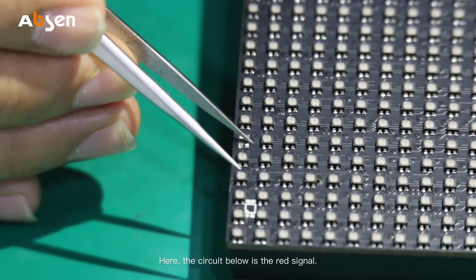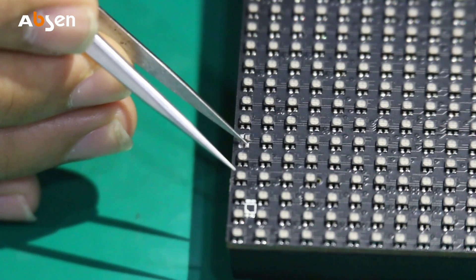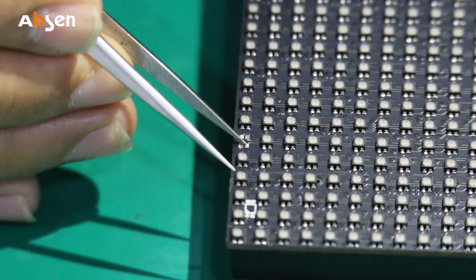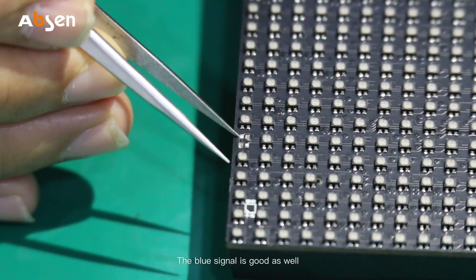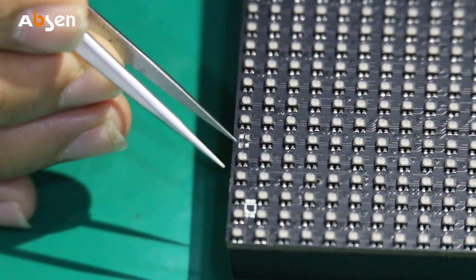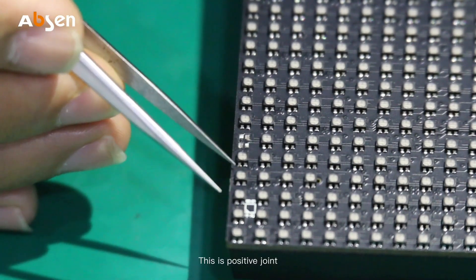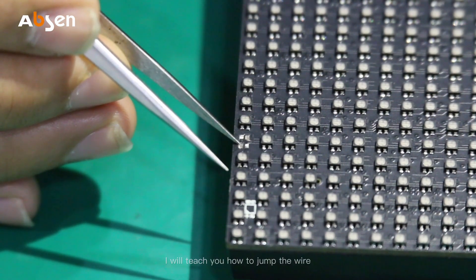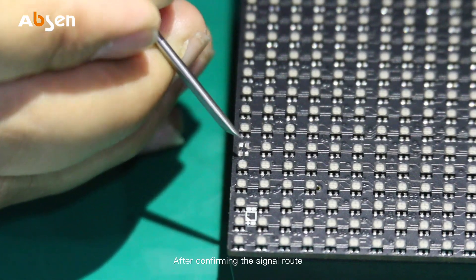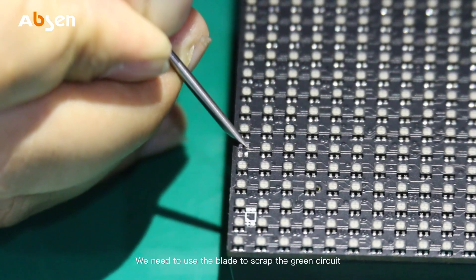Here the circuit below is the red signal. The red signal is good. The circuit is a blue signal. The blue signal is good as well. This is positive pole. We can connect the positive signal from the pixel next to it.